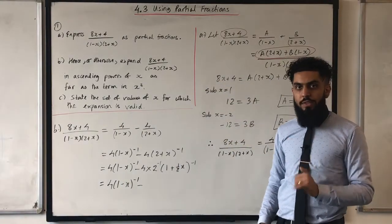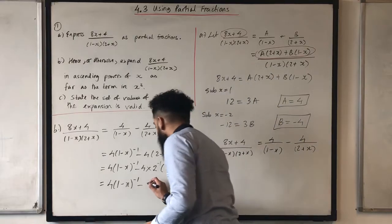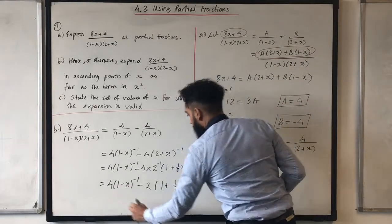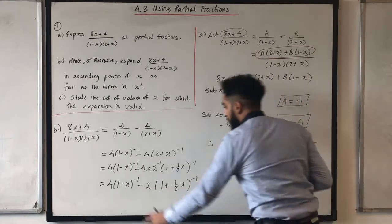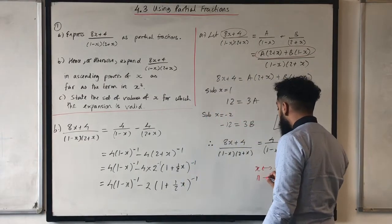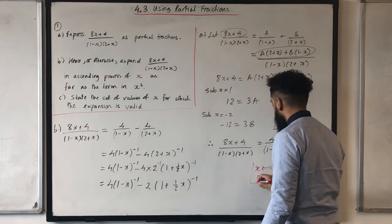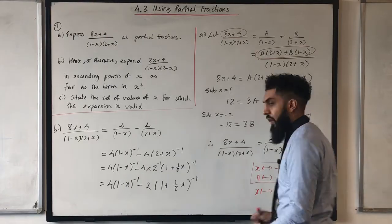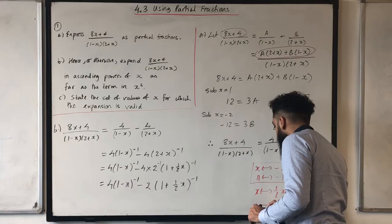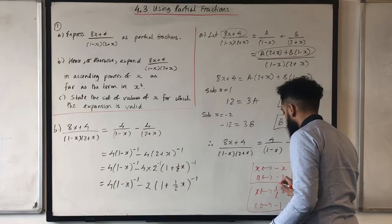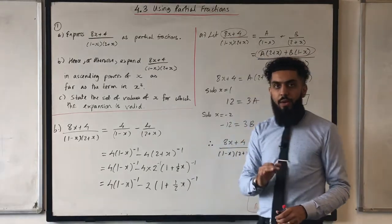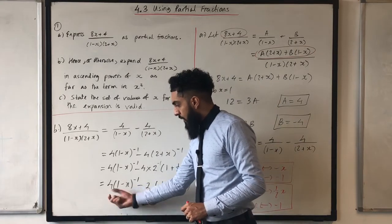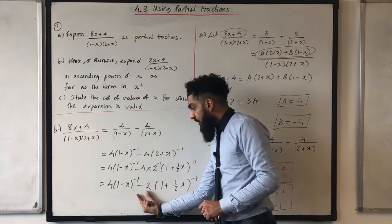2 to the power minus 1 is one-half. 4 times one-half is 2. So this becomes minus 2(1 plus one-half x) to the power minus 1. For the first bracket, replace x in the binomial formula with minus x and n with minus 1. For the second bracket, replace x with one-half x and n with minus 1. Expand both, then multiply 4 by your expansion for the first and minus 2 by your expansion for the second. Once you've done that, I'll put the answer up and you can check your work.